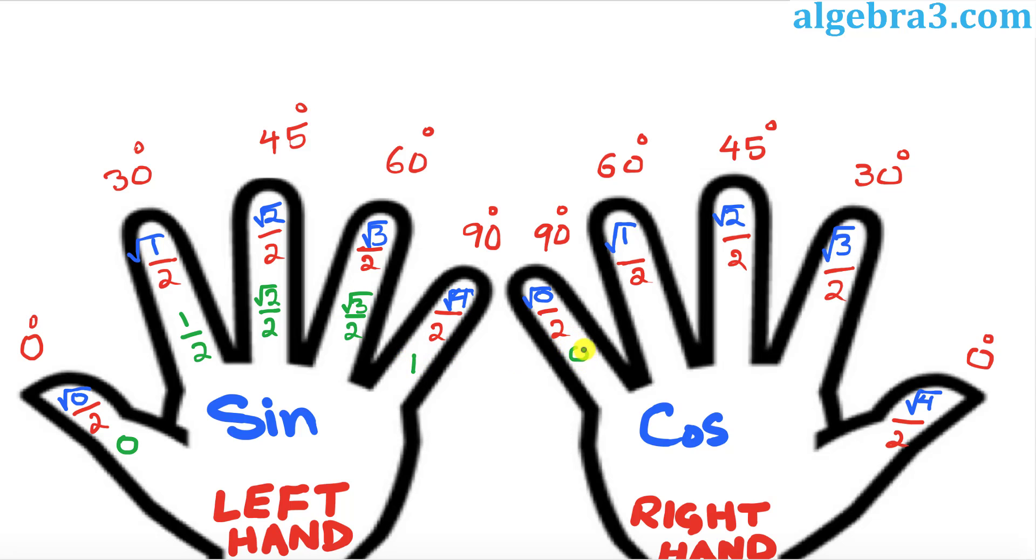This is likewise 0. This is 1 over 2. This is square root of 2 over 2. This is square root of 3 over 2. And this is going to become simply 1.